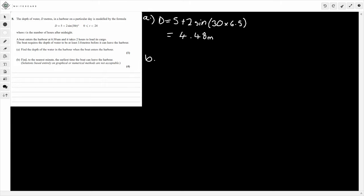Now for part B, we have to find the earliest time that the boat can leave the harbour. So the boat has to be, the depth of water has to be at least 3.8. So what that means is that this, D, is going to be 3.8. So set this up. So that's going to be 5, plus 2 sine 30t, and that's going to be equal to 3.8.